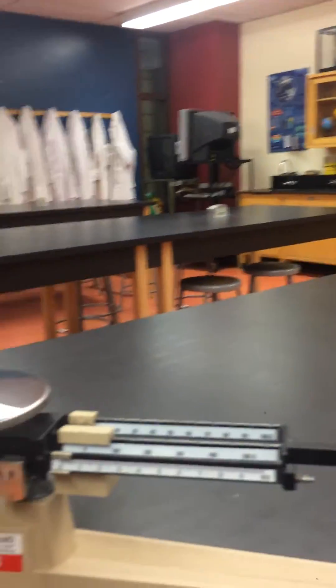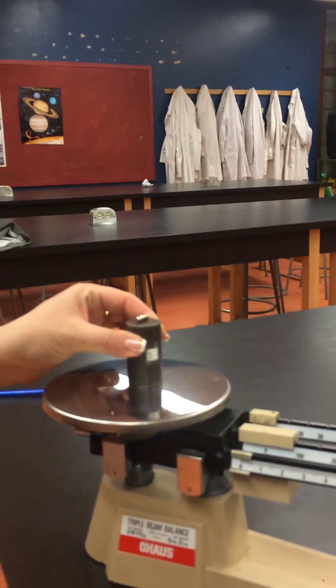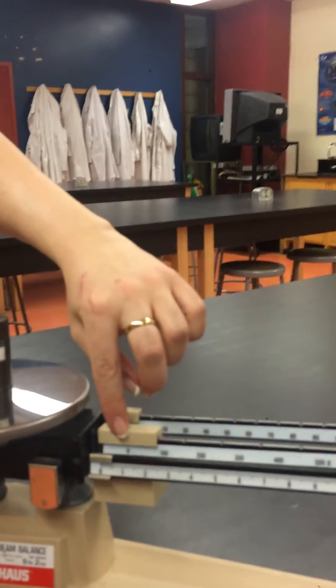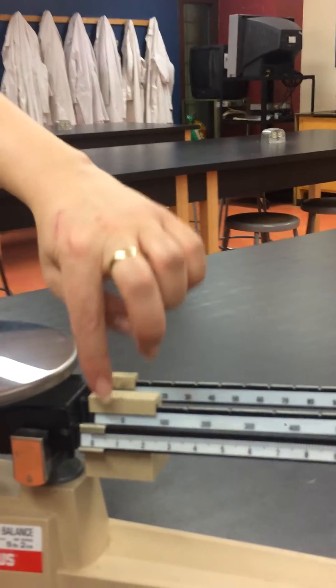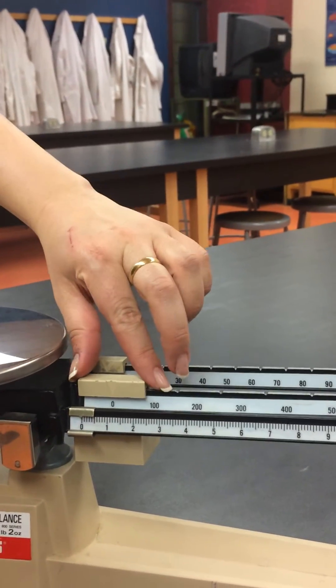Now carefully place your object on the pan. We always start with the hundreds, then the tens, then the units. So you carefully move your slider.